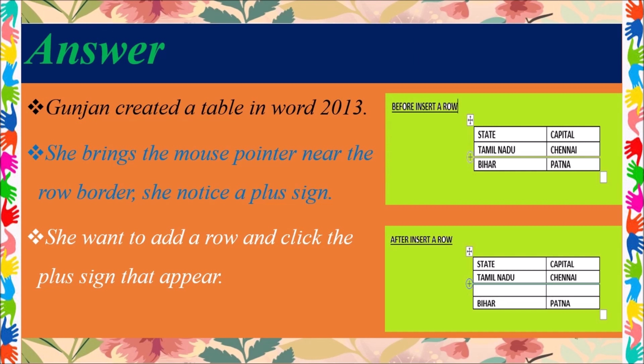So this is the operation of the plus sign within the table creation options that Kunjan used. In today's class, we discussed the application-based question from Chapter 3, option C, with its answer. In the next class, we will discuss another topic. Thank you.